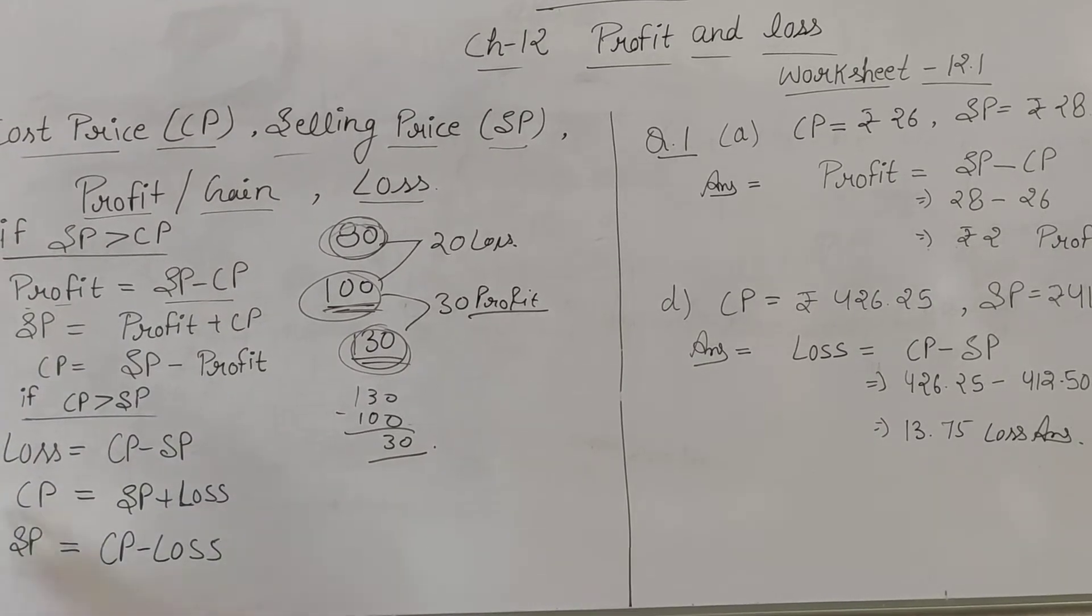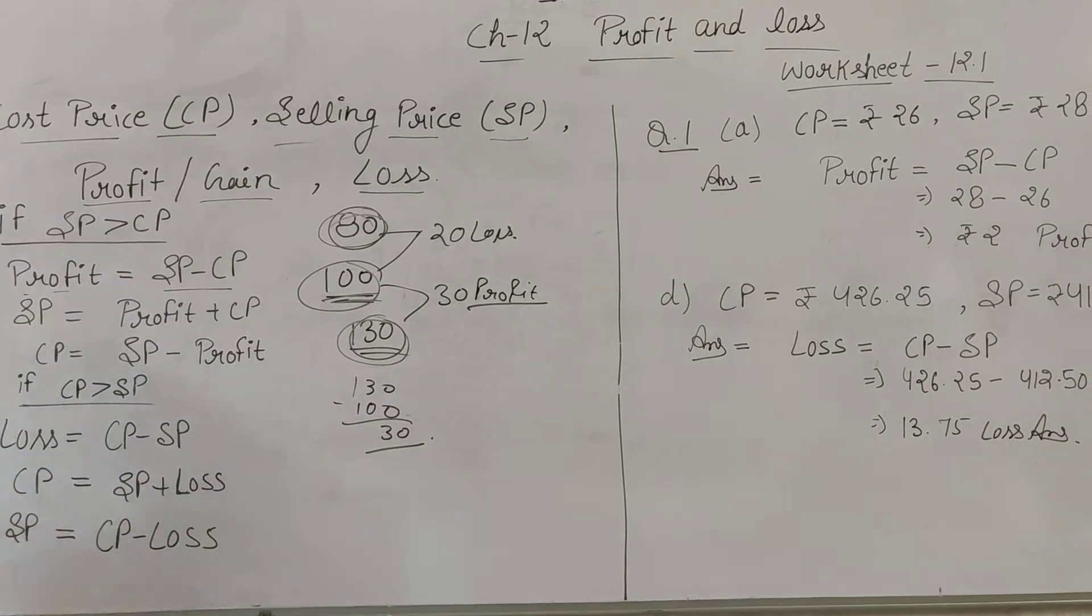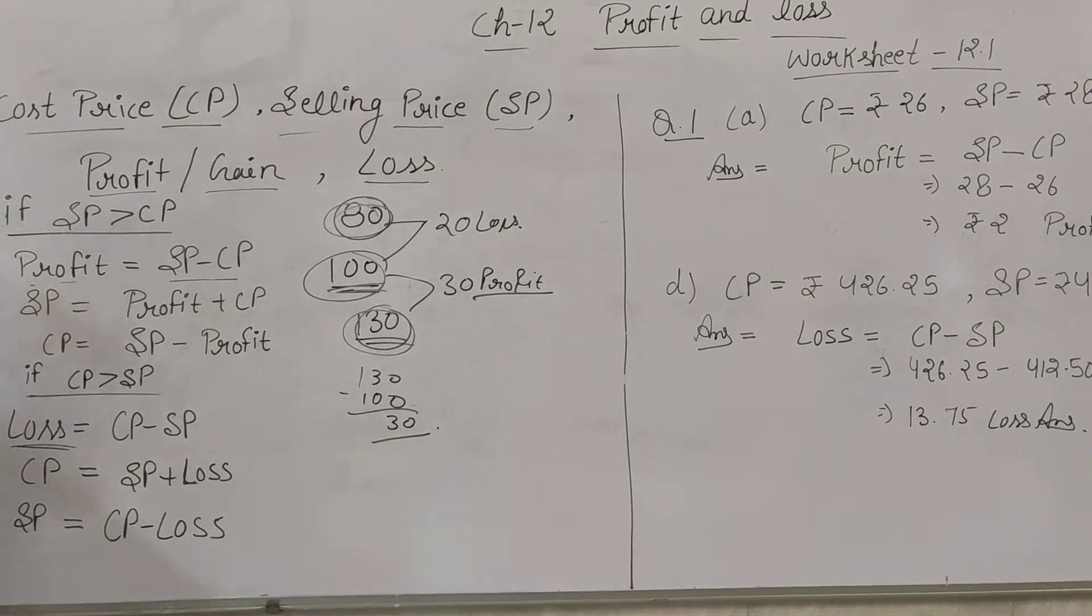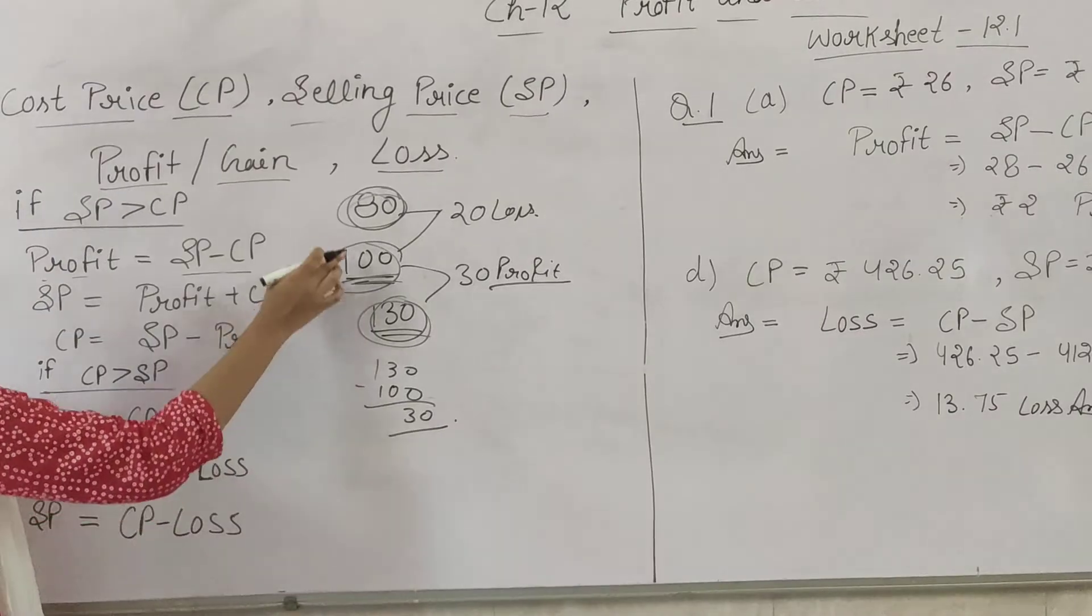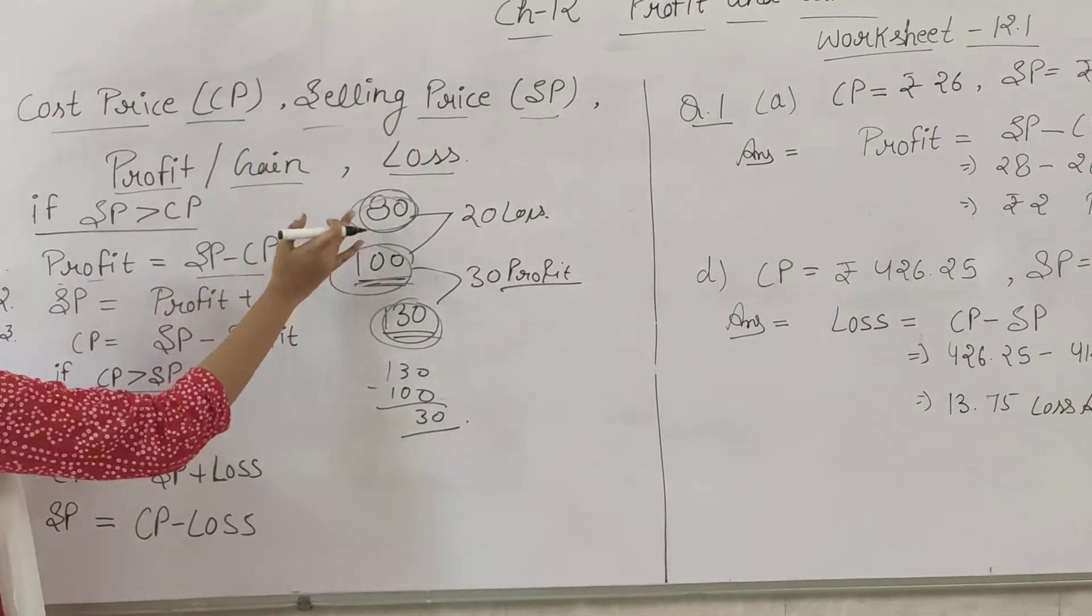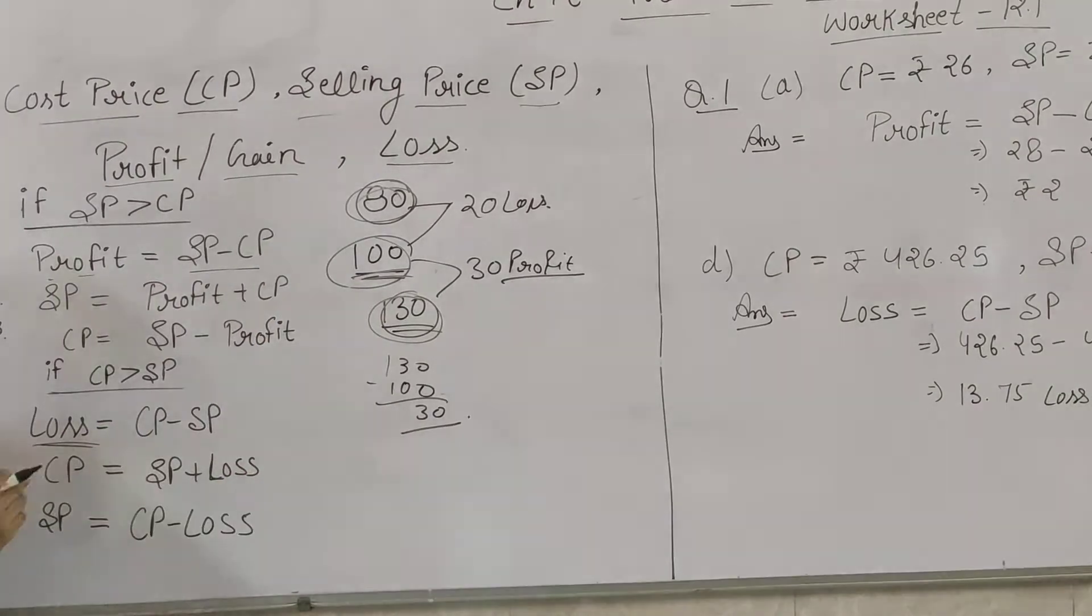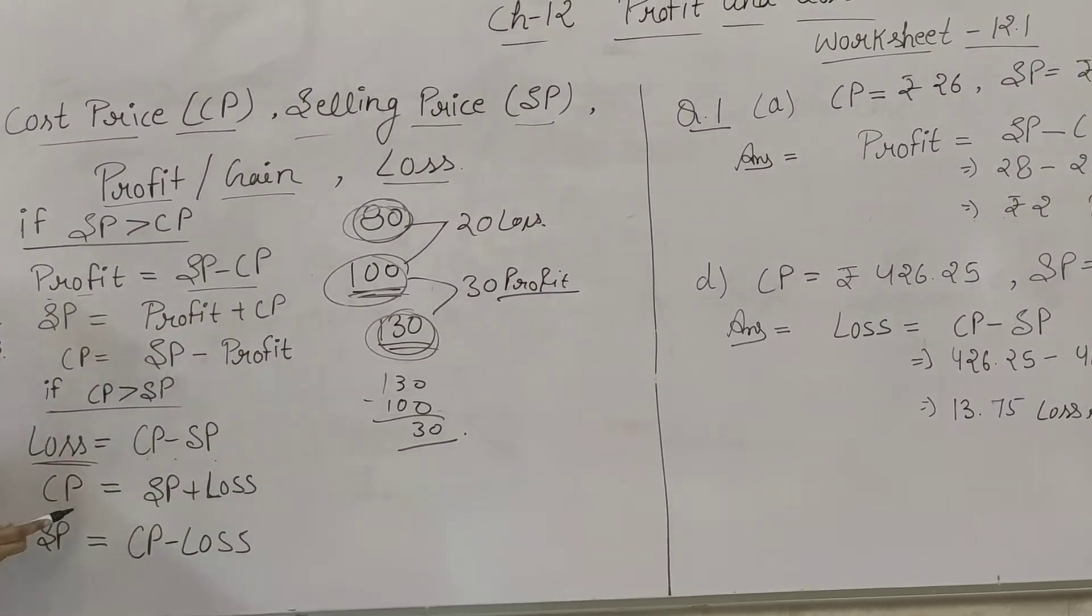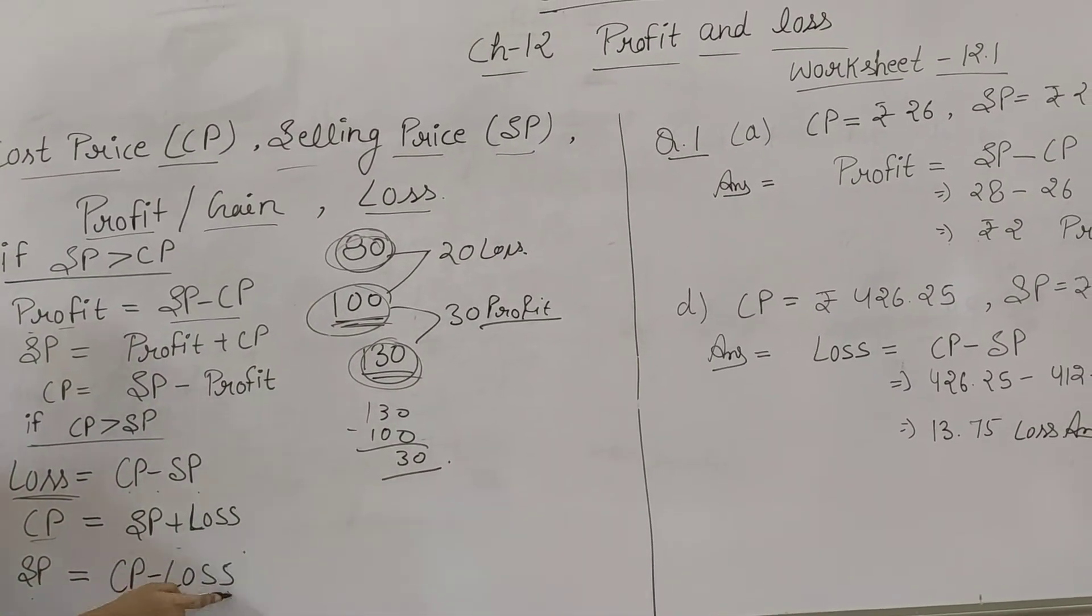When CP is more than SP, then there is a loss. We always remember that when CP is more than SP, it means loss. For example, if you bought at 100 and sold at 80, then loss occurred. The loss formula is CP minus SP. CP can be calculated as SP plus loss, and SP equals CP minus loss.